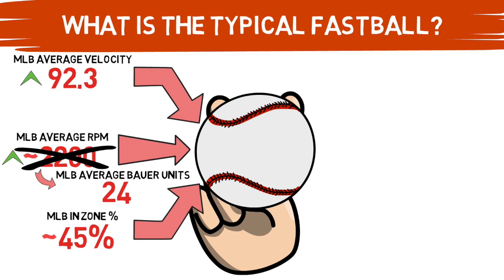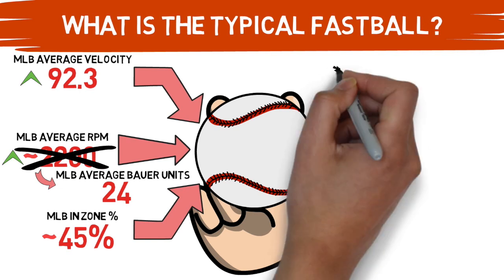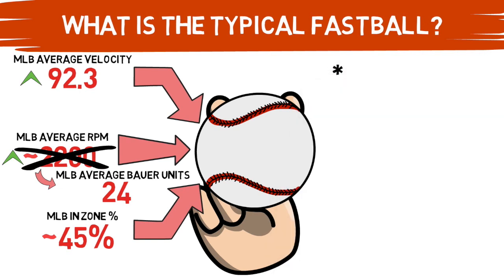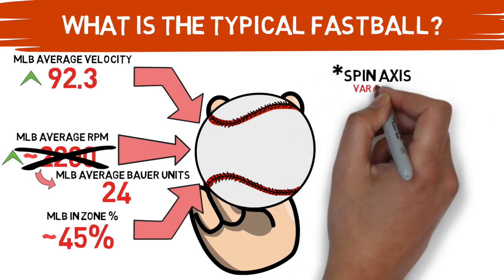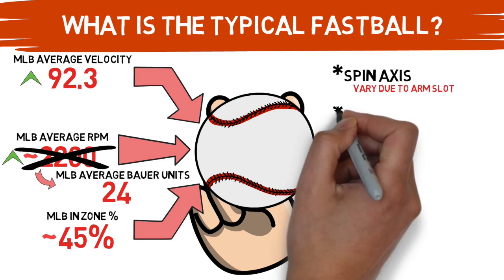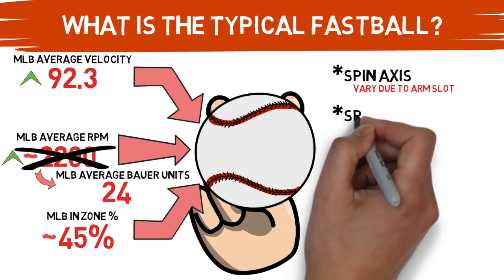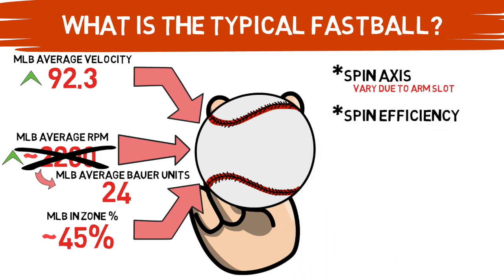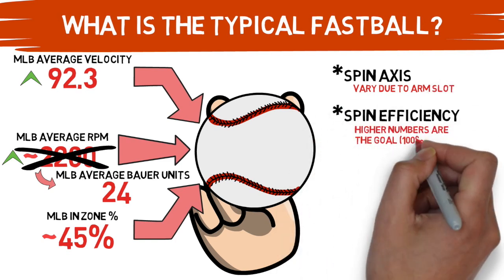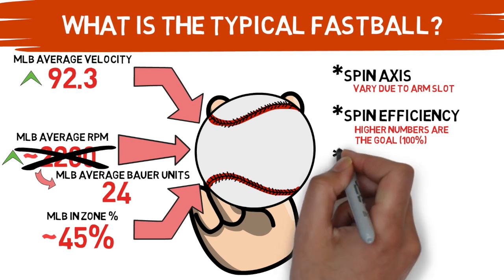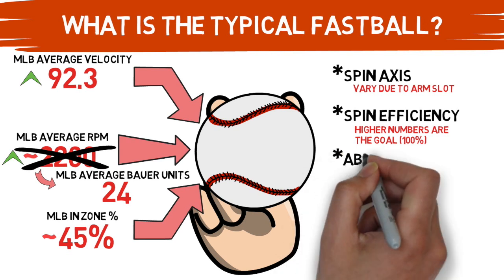This information is all great. However, it doesn't give us the whole picture of how this athlete's fastball actually plays. What separates a good fastball from a bad one isn't always just velocity. There are other factors at play, such as spin axis, spin efficiency, and the abnormality of this pitch.